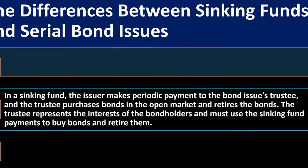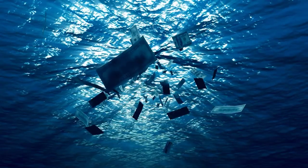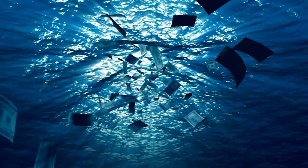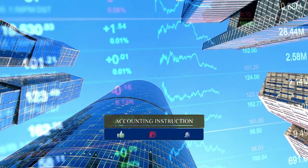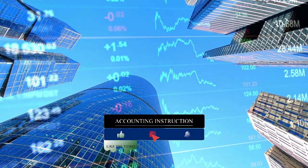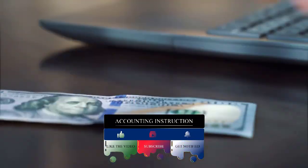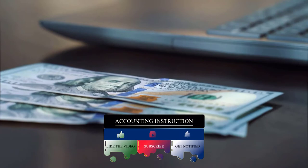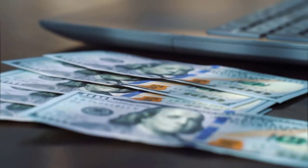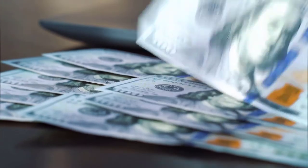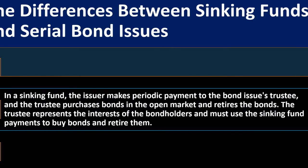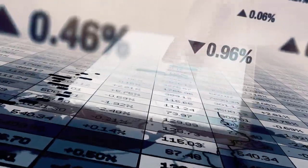The difference between sinking funds and serial issues: in a sinking fund, the issuer makes periodic payments to the bond issue's trustee, and the trustee purchases bonds in the open market and retires them. With a typical bond structure, you have an end date — the maturity date — where you pay back the principal. This is different from a mortgage, where you pay back installments of equal payments that have both interest and principal components. With bonds, you have that lump-sum principal payment at the end, which is why a sinking fund strategy can ease the burden at maturity.